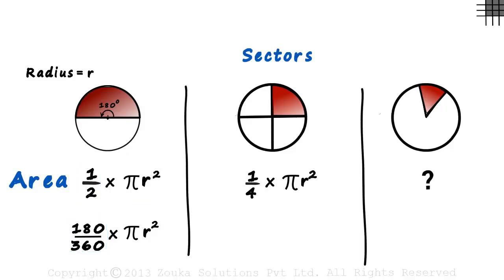Similarly, since the sector angle is 90 degrees in the second case, the area of this sector will be 90 by 360 multiplied by pi r squared, which equals this.